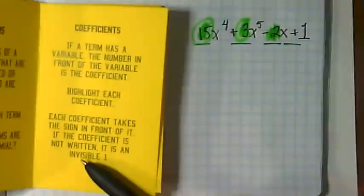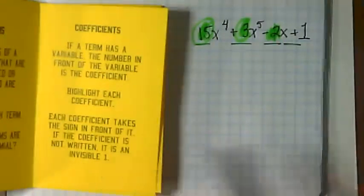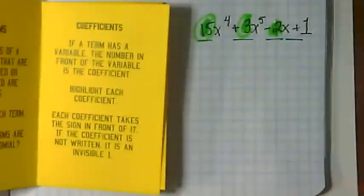Each coefficient takes a sign in front of it. If the coefficient is not written, it is an invisible one. Let's turn the page.